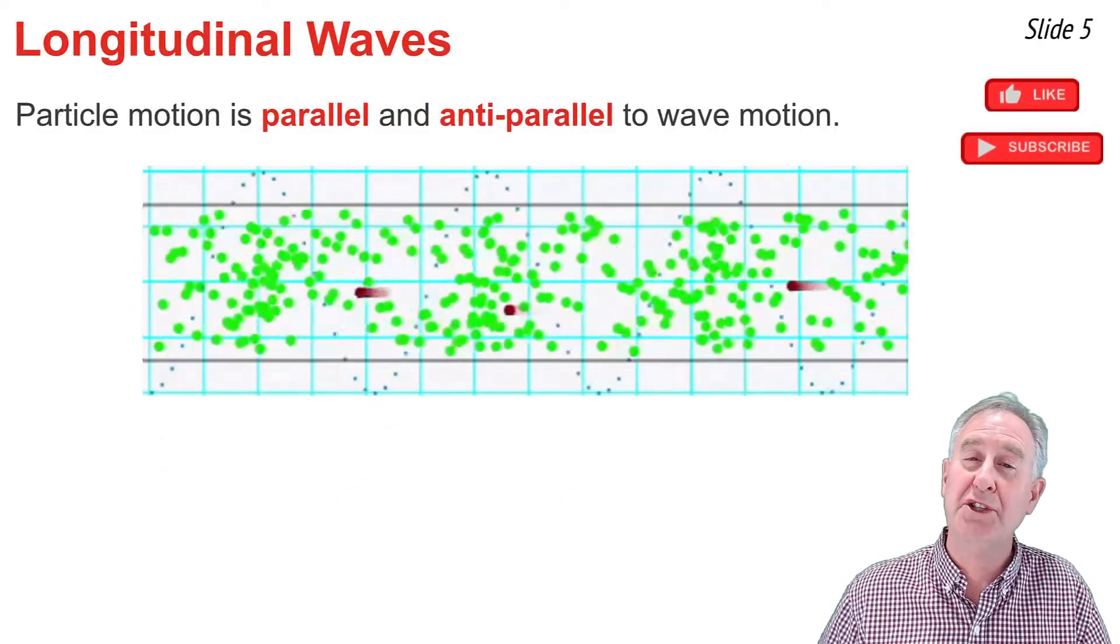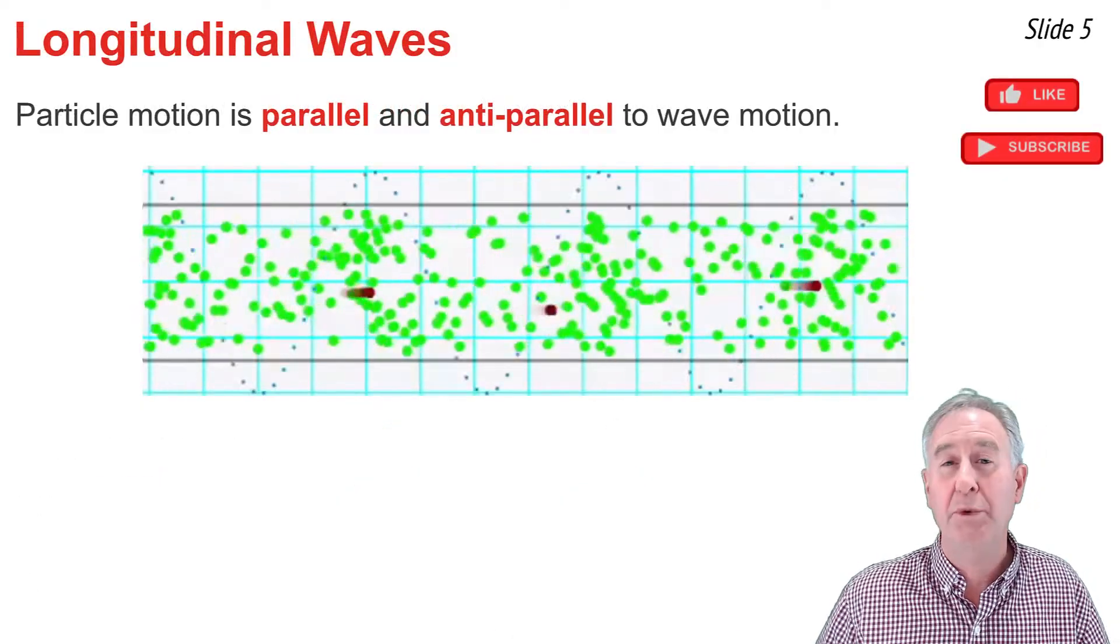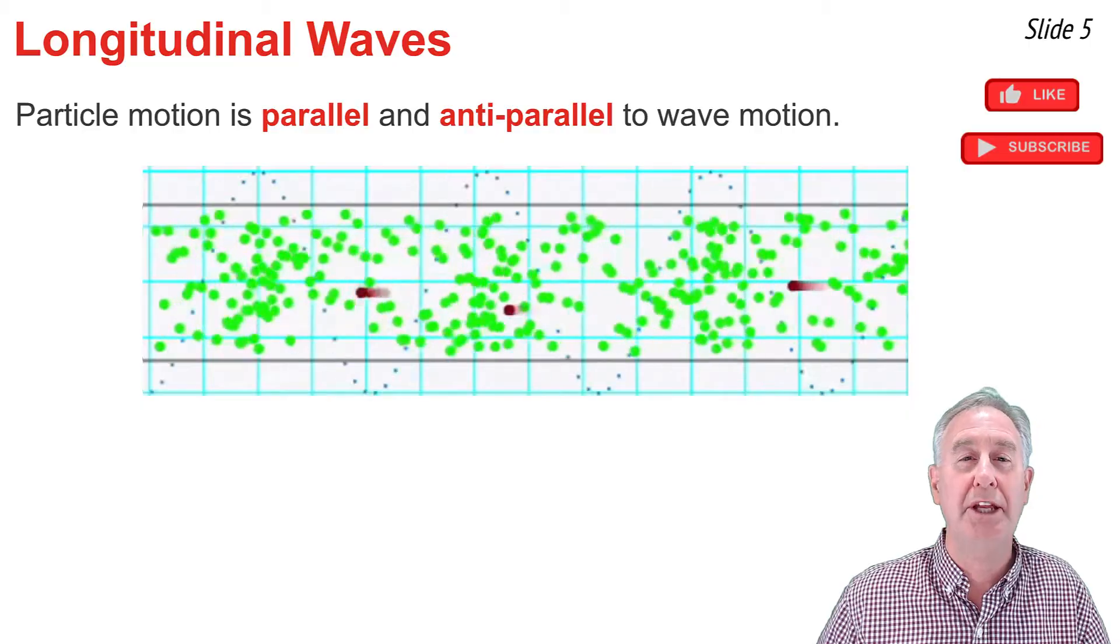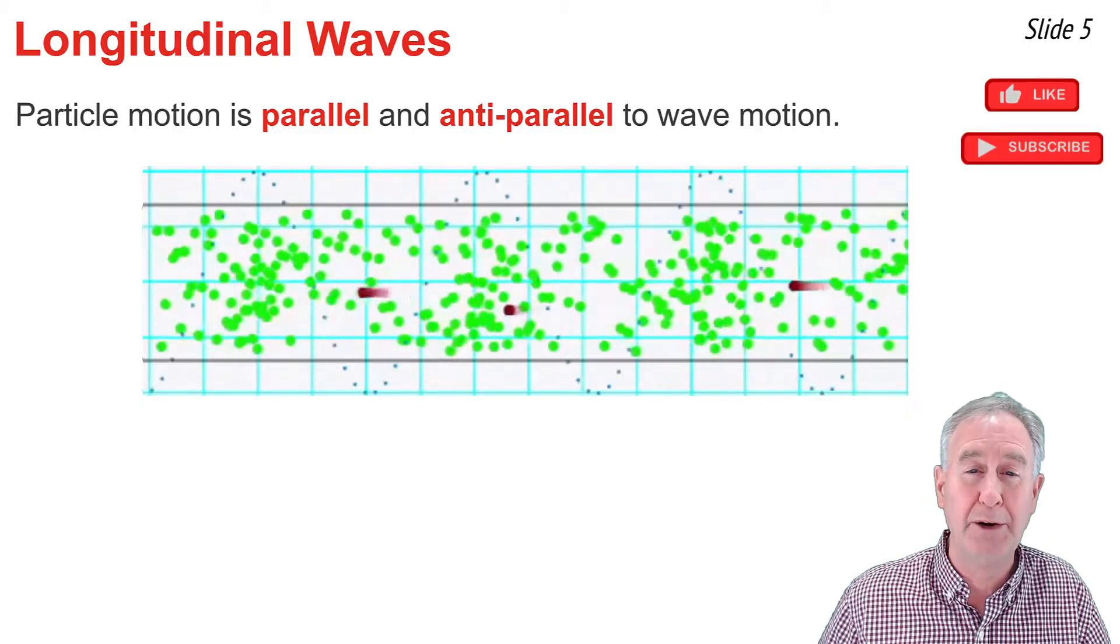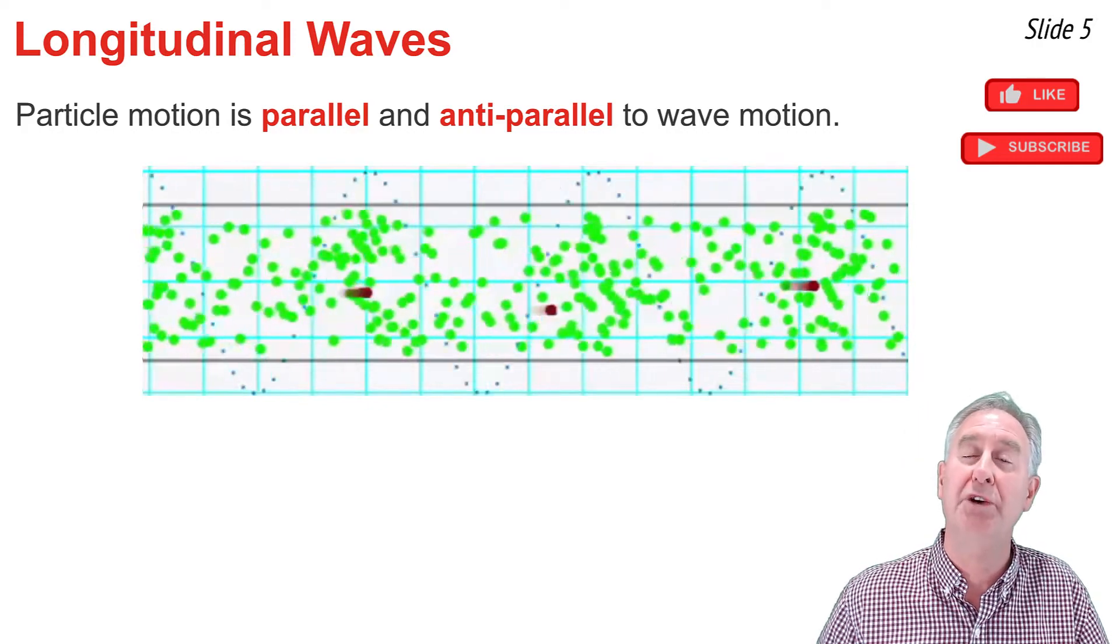A second category of waves is known as the longitudinal wave. When a longitudinal wave exists within a medium, the particles of the medium vibrate back and forth in a direction that is parallel and anti-parallel to the direction that the wave moves.